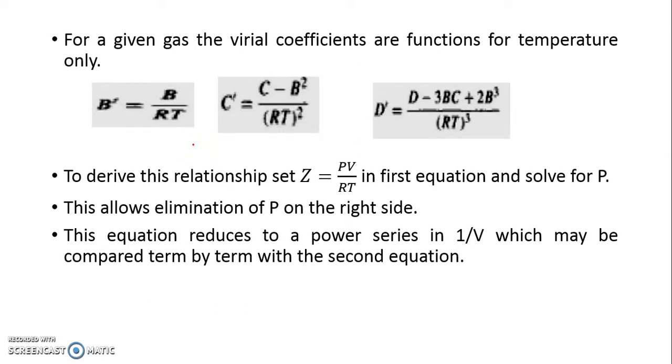The mathematical relationship between b and b dash, c and c dash, and d and d dash can be obtained by setting z equal to pv/RT and then solving for p. Eliminate p on the right hand side by substituting p equal to zT by v, and you can get the series in the form of 1 upon v, 1 upon v square.